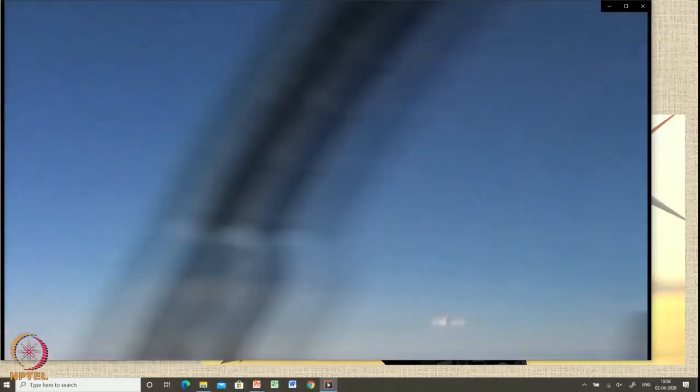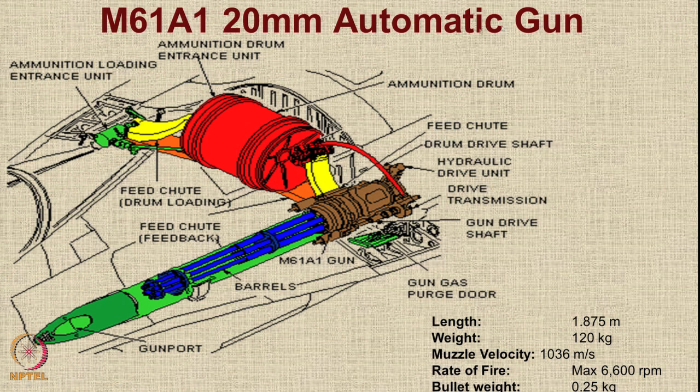A video clip shows the AIM-120 missile mounted on the wingtips, being released and proceeding at Mach 4, and hitting the target. Another standard fit on the F-16C is the M61 Vulcan cannon. It weighs around 120 kilograms and fires 20 mm diameter bullets each weighing around 250 grams. It can fire at up to 6600 rpm, normally operated at around 4000 rpm.